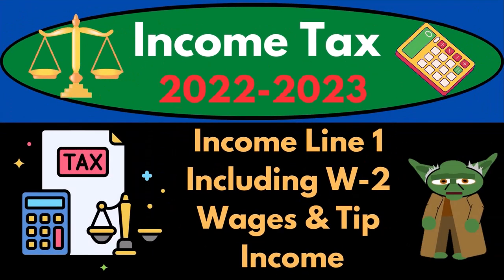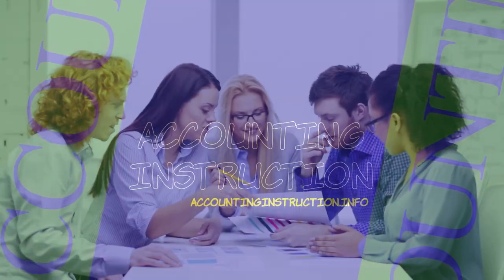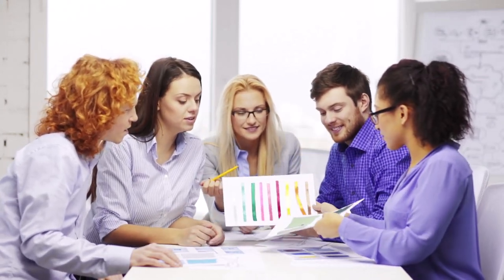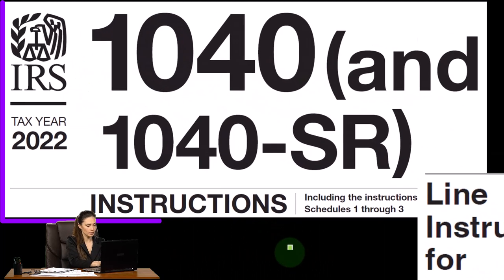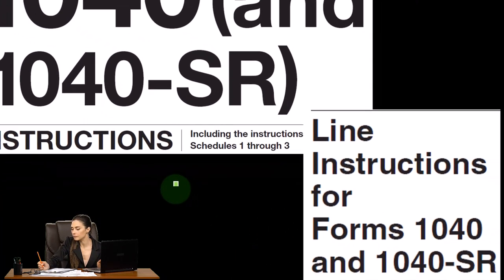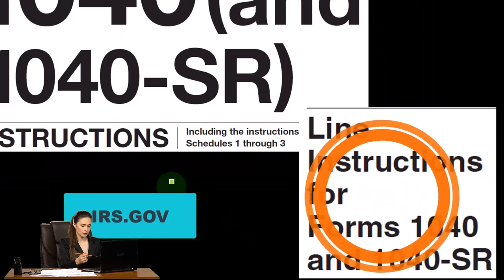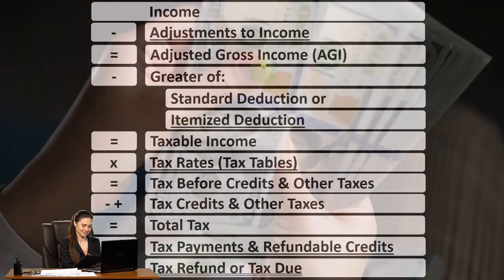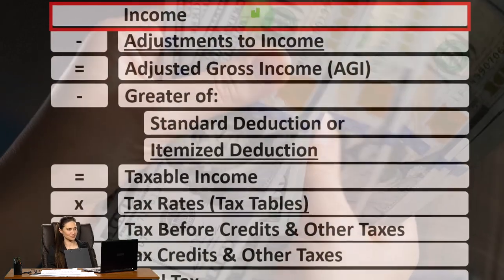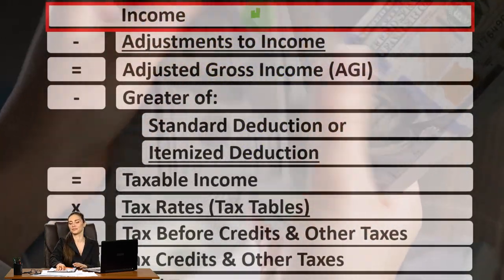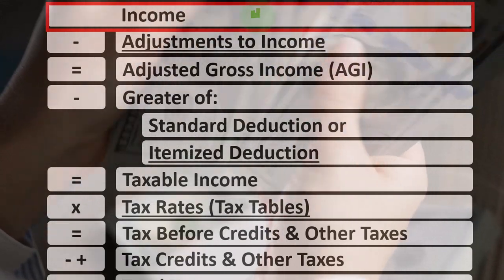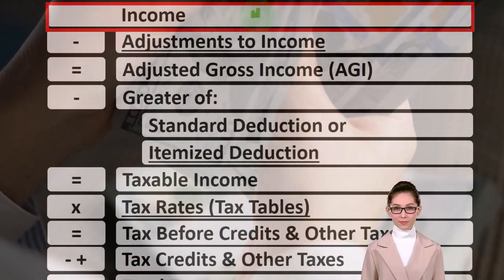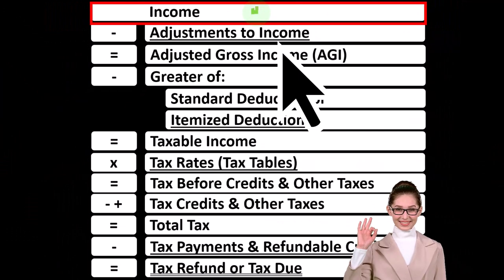Income tax 2022-2023. Income Line 1, including W-2 wages and tip income. Let's do some wealth preservation with some tax preparation. Most of this information comes from the Form 1040 instructions for tax year 2022, which you can find at the IRS website, irs.gov. When looking at the income tax formula, we're focused on Line 1 — that being income — remembering that this single line might be comprised of many different types of income coming from different forms and schedules feeding into this income line item.